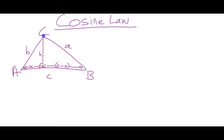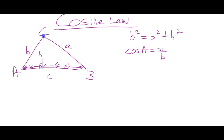The analysis works like this. We know that in the left-hand triangle, by the Pythagorean theorem, B squared is equal to X squared plus H squared. We also know, in that left-hand triangle, that the cosine of angle A is adjacent over hypotenuse, which is X over B. So the cosine of angle A is equal to X over B.